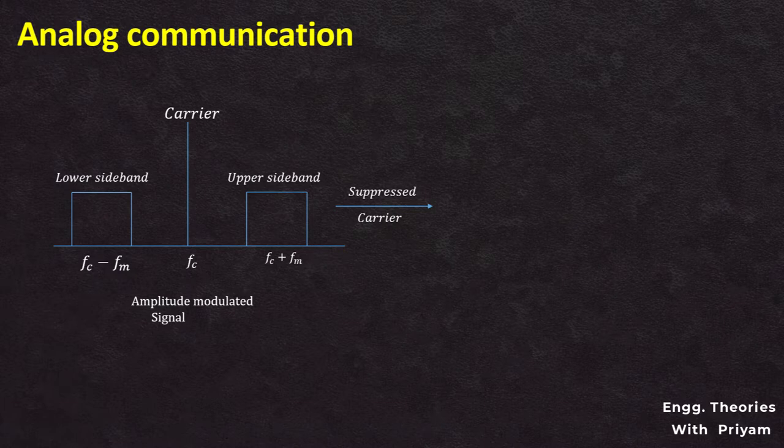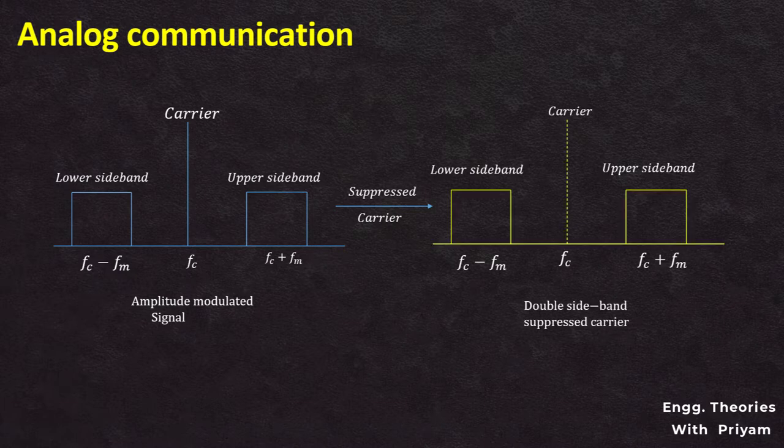The carrier suppression can be done by using two non-linear devices such as diodes and transistors, connected in a balanced mode. In balanced mode, they suppress the carriers of each other and only the sidebands are left, hence a DSBSC signal is created. A ring modulator may be defined as a circuit in which two non-linear devices such as diodes are connected in a balanced configuration to produce a DSBSC modulated signal.